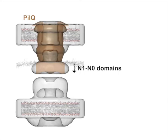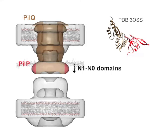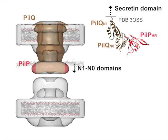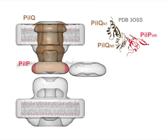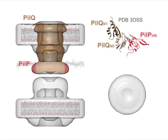N1 is N-terminal of the secretin domain, and N0 is known to bind to PLP. The difference maps show that PLP localizes to the periphery of the mid-periplasmic ring. There is a crystal structure available of the PLQ N1 and N0 domains bound to PLP. In the top view of the mid-periplasmic ring, we can mark where the PLQ N1 domain should localize to connect with the secretin domain above.